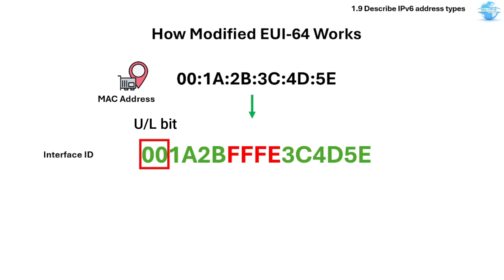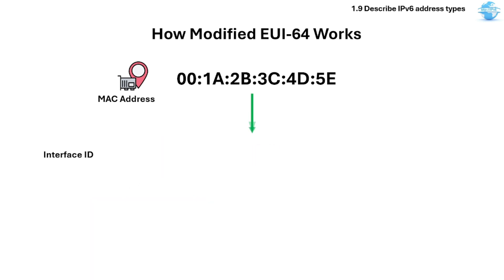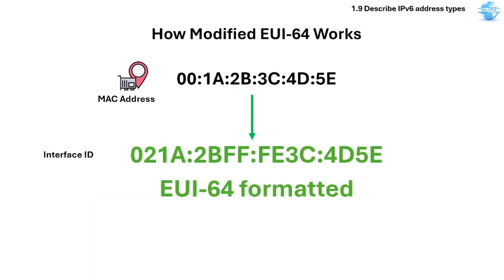The 7th bit is the second bit in the first byte. To flip it, convert the two bits into binary first, then flip the 7th bit so that 0 becomes 1. Converted back to hex, it will become 02. So we now have the new value 021A at the beginning of the EUI-64 formatted interface ID.